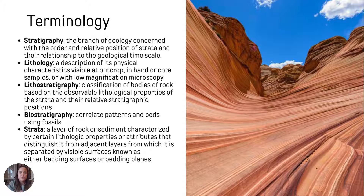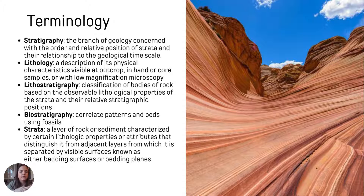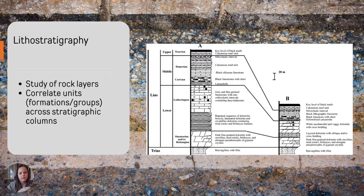Biostratigraphy is correlating patterns and beds using fossils. It's similar to correlating lithologies or correlating the rocks, but we're correlating based on the fossils that are present within the rocks that we see. Starting with lithostratigraphy, this is a study of the rock layers where you can correlate units across stratigraphic columns.